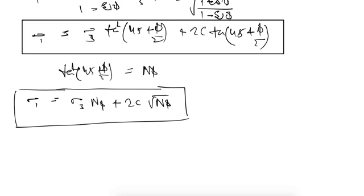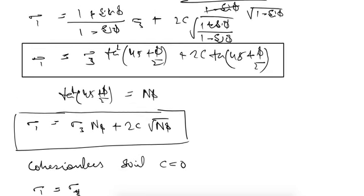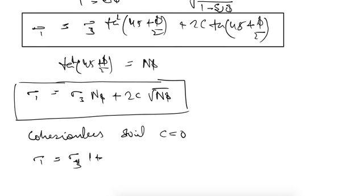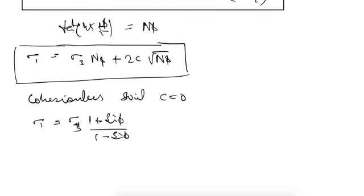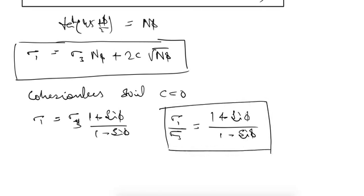For a cohesionless soil, c = 0, so sigma 1 = sigma 3 · (1 + sin φ)/(1 − sin φ), giving σ1/σ3 = (1 + sin φ)/(1 − sin φ). Rearranging this expression, sin φ = (σ1 − σ3)/(σ1 + σ3). These are additional useful relationships.